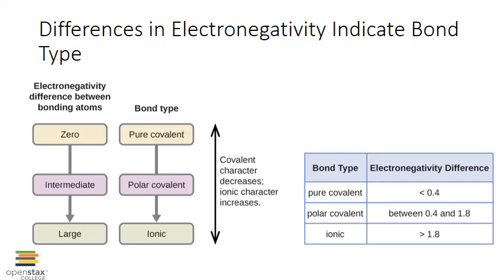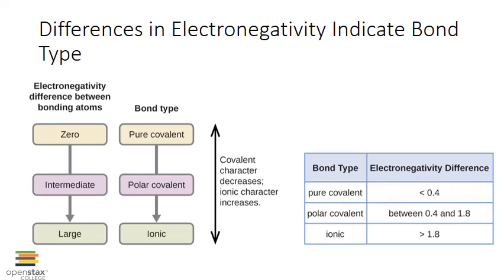Now we've introduced the concept of polar bonds already. In pure covalent bonds, there is a small difference in electronegativity between the two atoms bound together, so electrons are shared more equally and no dipole develops — this is also known as a nonpolar bond. In a polar bond, however, there is a larger difference in electronegativity — not so large that it becomes an ionic bond, but large enough that electrons are shared unequally. The larger difference results in the formation of a dipole, and the strength of the dipole moment largely depends on the magnitude of the electronegativity difference between the atoms.